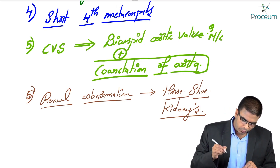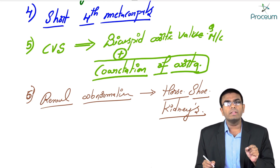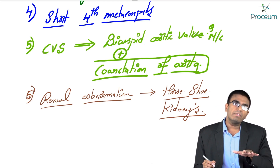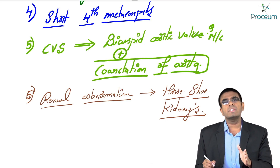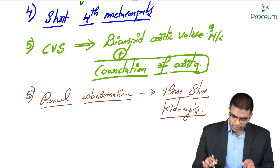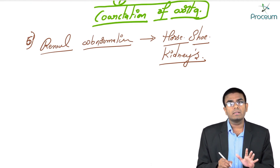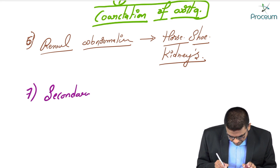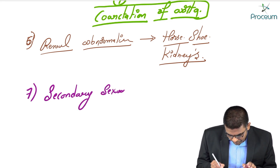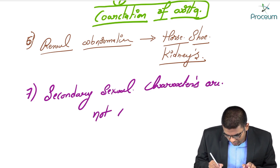On laboratory tests, as the ovaries are not properly formed, estrogen levels and androgen levels are very low. The ovaries produce estrogens from granulosa cells and androgens from theca cells. In Turner females, as estrogens and androgens are not properly produced, secondary sexual characters are not developed.